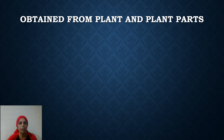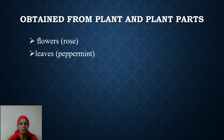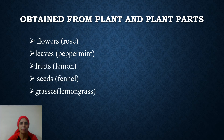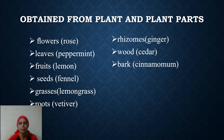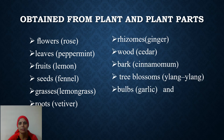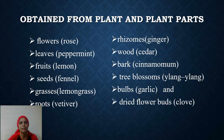Let us find out from which plant parts we can get essential oils. There are flowers — the example is rose — leaves, fruits, seeds, grasses, roots, rhizomes, wood, bark, tree blossoms, bulbs, and dried flower buds like the clove. These are some of the examples.